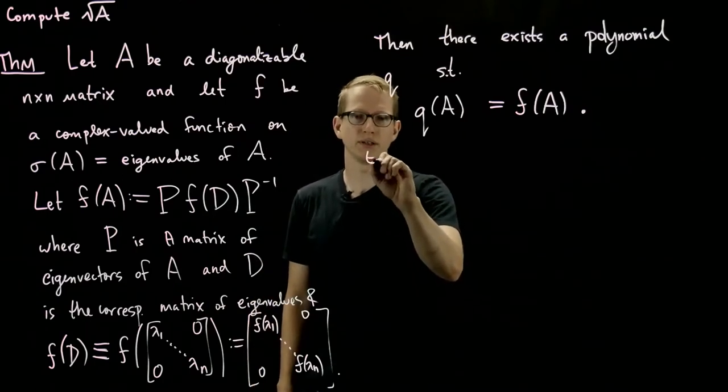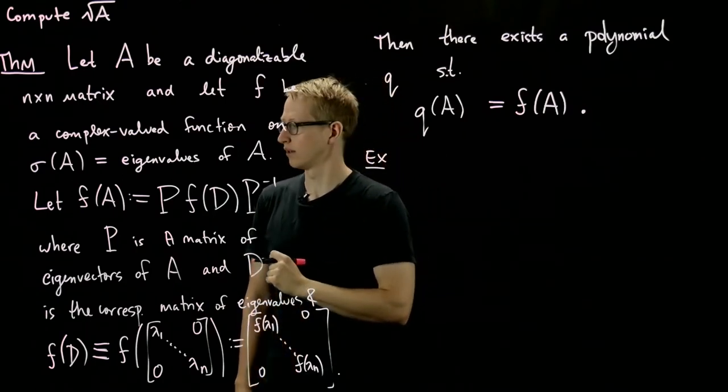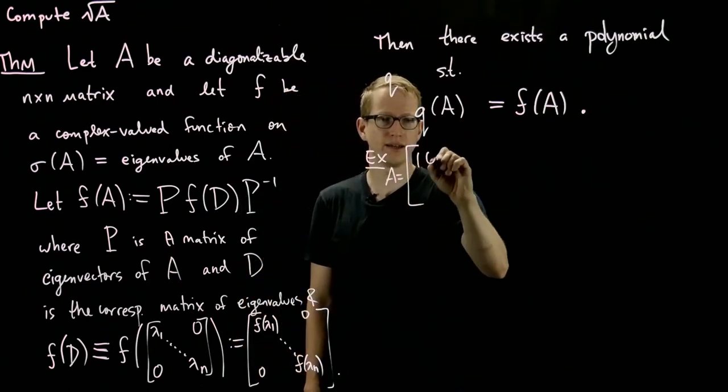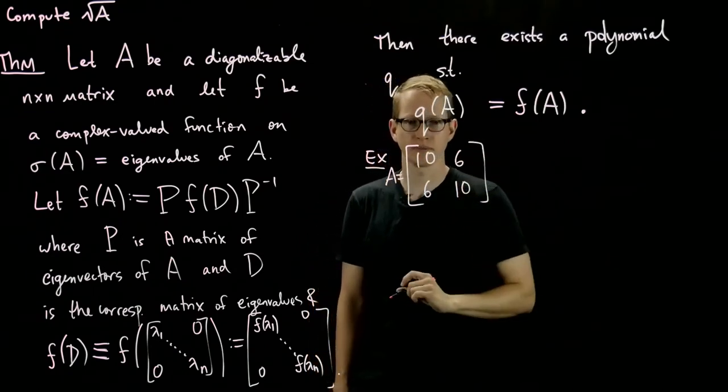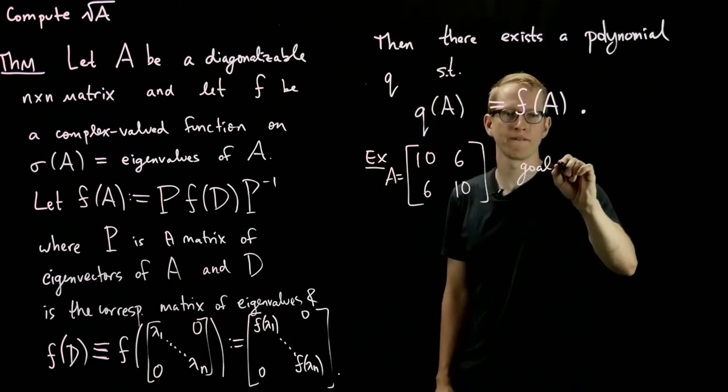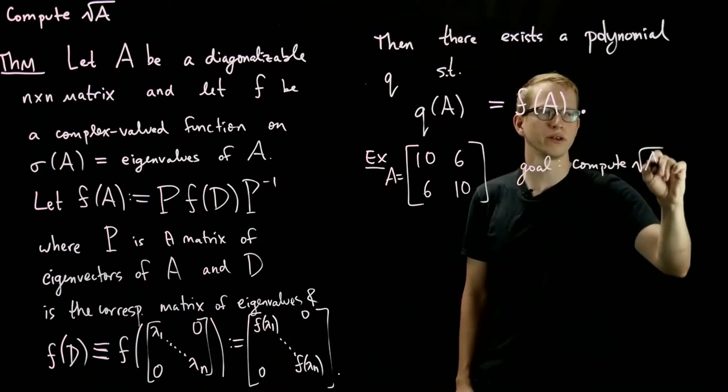So we might as well start this example now and continue it in the next video. So the example is going to be, let A equal the matrix [[10, 6], [6, 10]]. And our goal is to compute the square root of A.